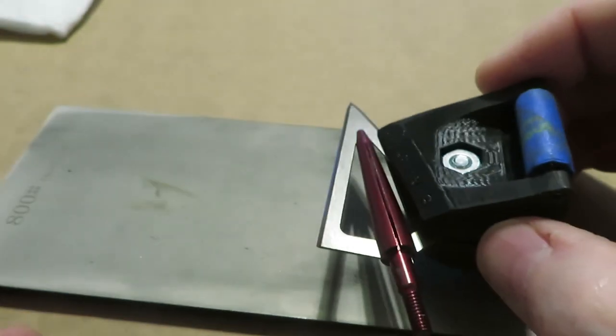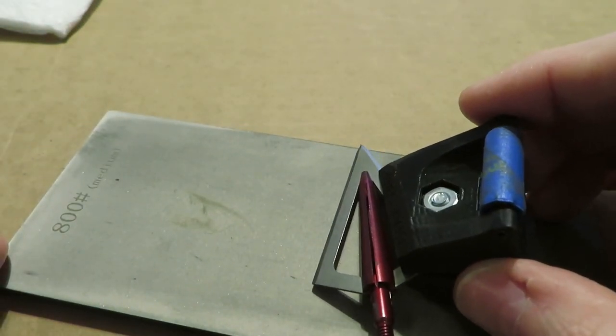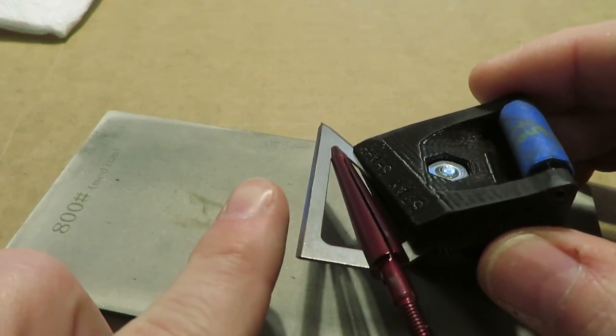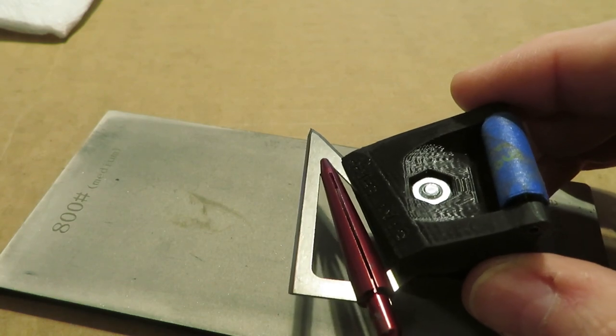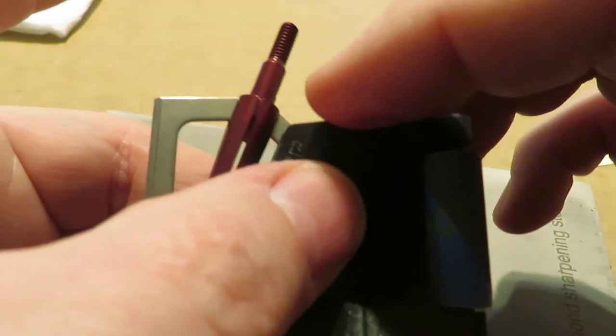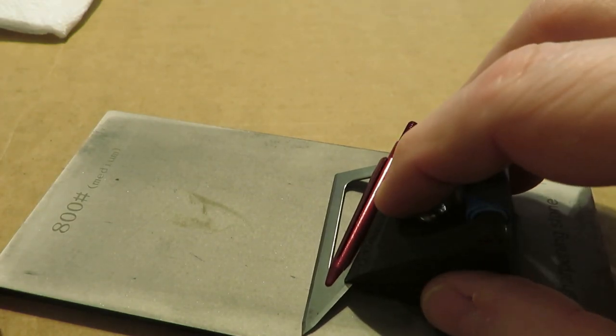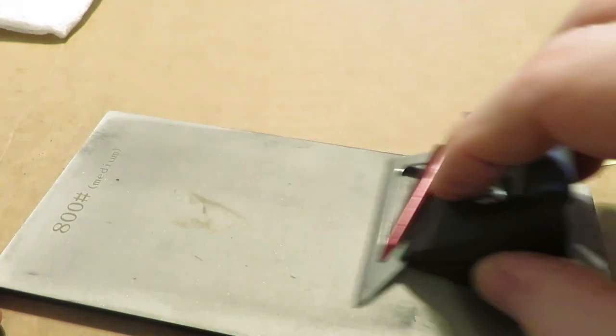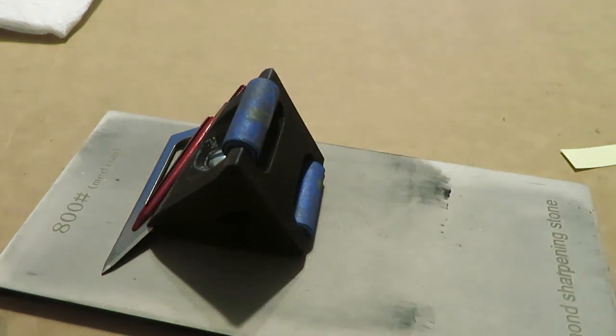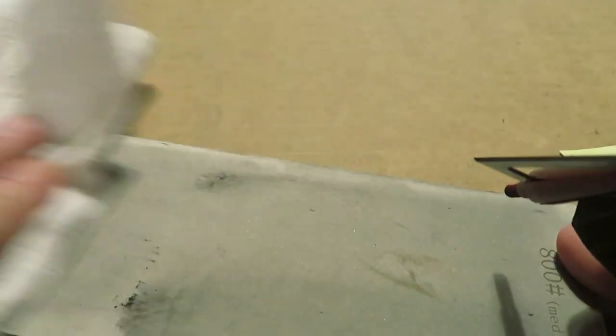Once we have achieved the burr at 800 grit on this side, there's no point in sharpening any further. We've folded over some excess metal and reached the other side of the blade. At this point we will flip it over. You'll hear it, it'll be a little crunchy at first and then it gets smoother sounding as we've broken the burr off. Now I'm going to sharpen it again. Always rotate your plates, get more life out of them.